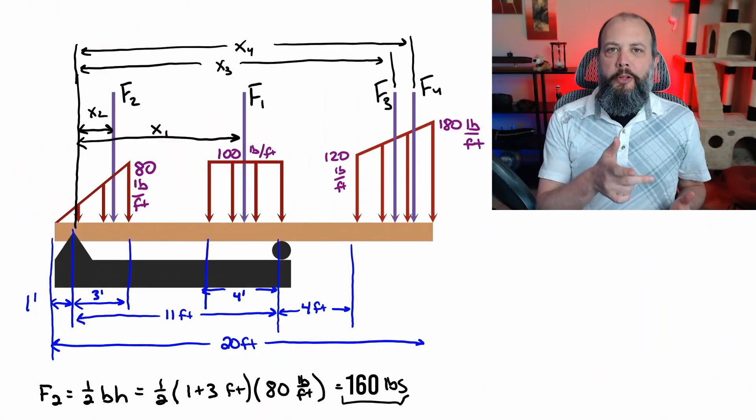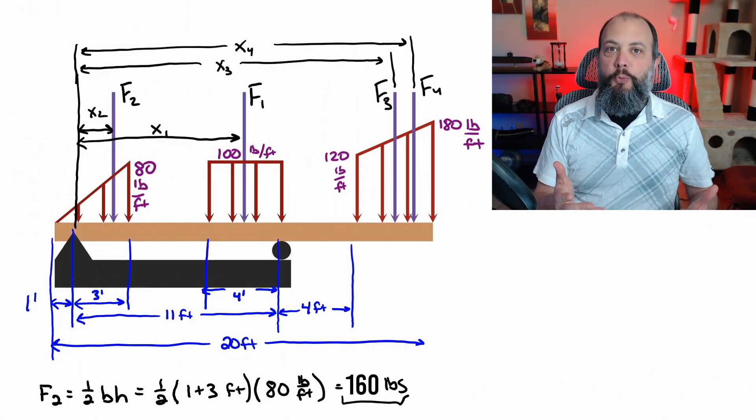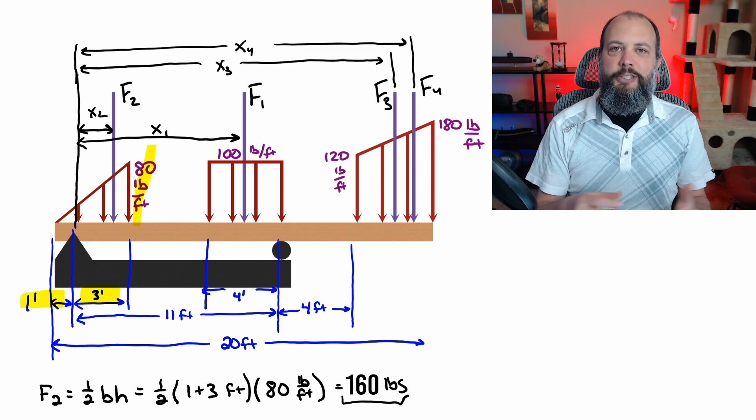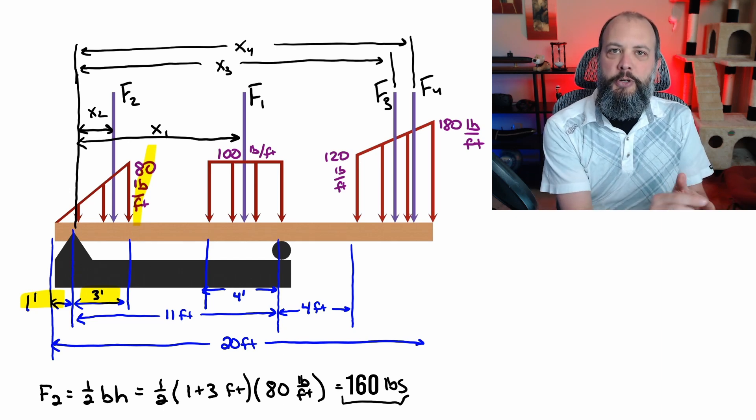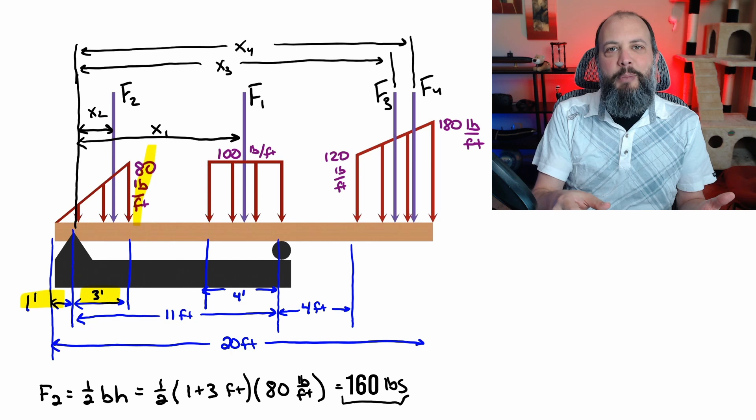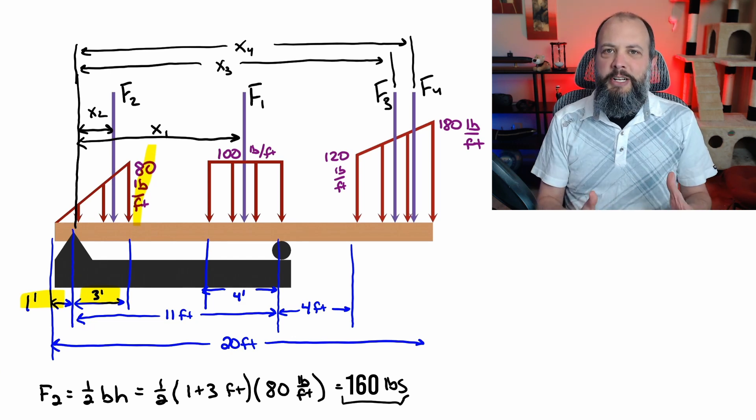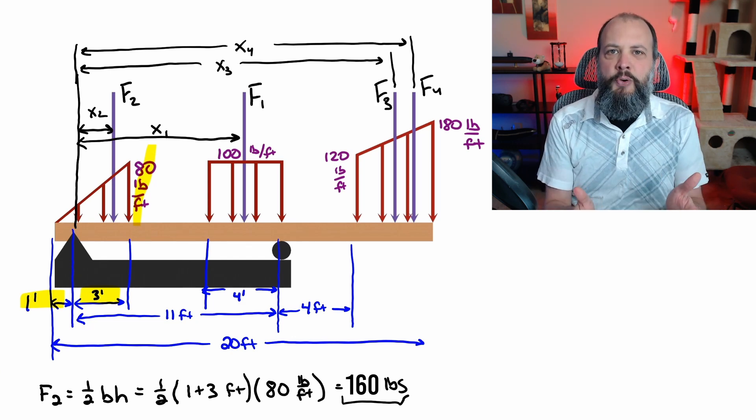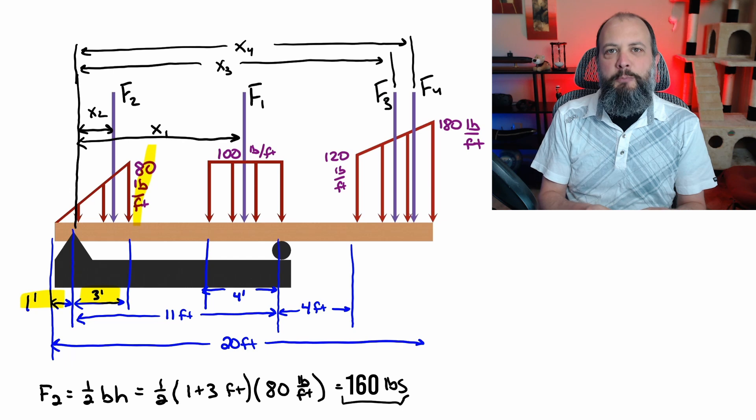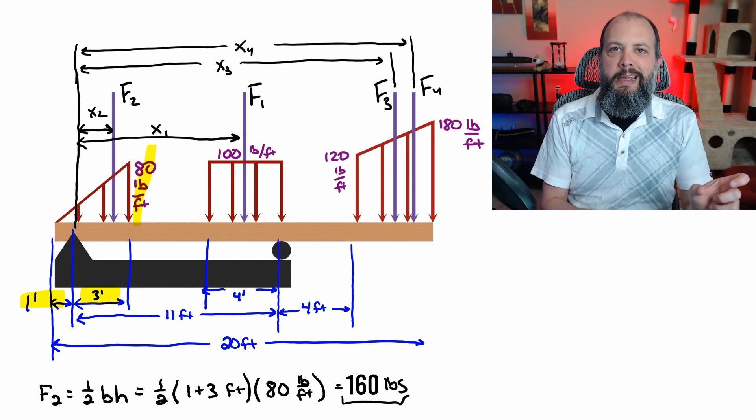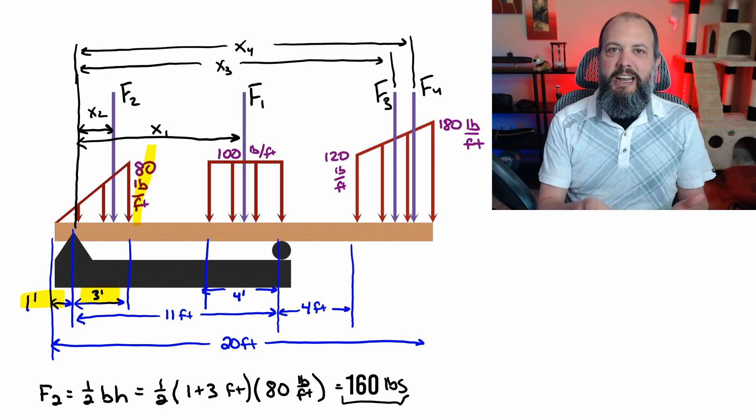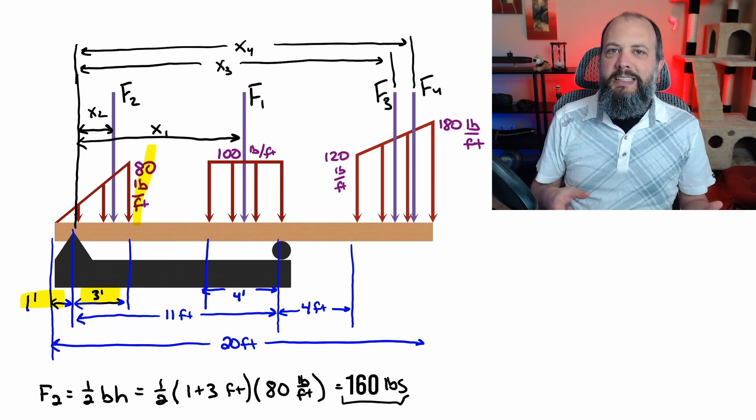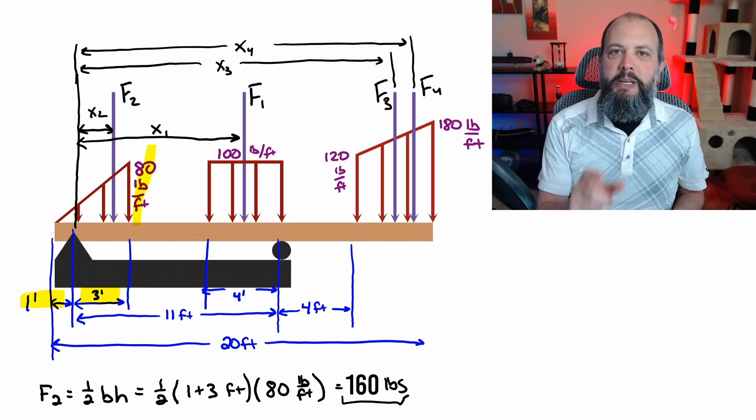Force two is the triangle on the left-hand side. Area of a triangle is one-half base times height. That triangular distributed load increases from a load of zero pounds per foot on the far left up to 80 pounds per foot on the right. Since the pin joint sort of splits up the base of the triangle, you get the overall base by adding both the one foot to the left of the pin and the three feet to the right of the pin. And then you multiply by the height of the triangle, which is the given 80 pounds per foot. Multiplying this out, F2 is 120 pounds.